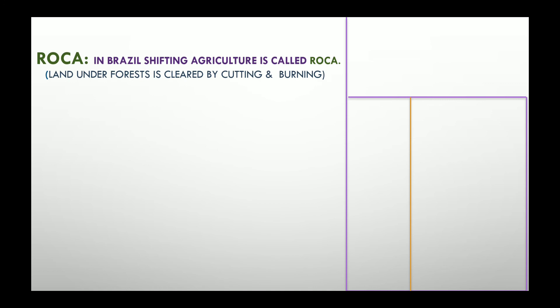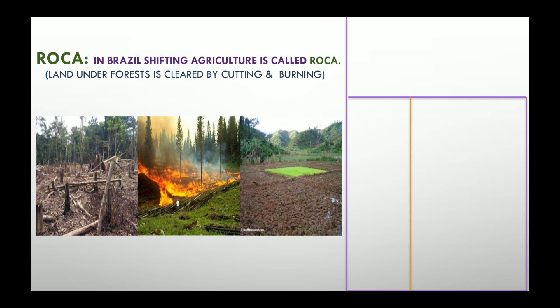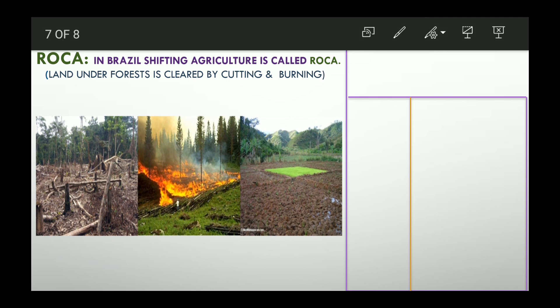In Brazil, shifting agriculture or shifting cultivation is called Roca. Here, land under forest is cleared by cutting and burning. There are three stages shown: in the first, trees are cut; in the second, they are burned; once this is done, the land gets cleared and is used for cultivation. This type of agriculture is called Roca in Brazil, and it is known by different names in India.